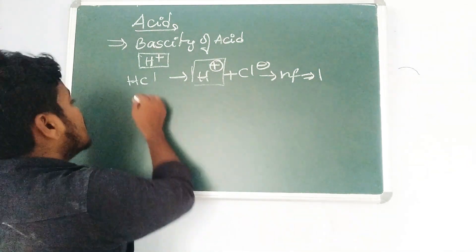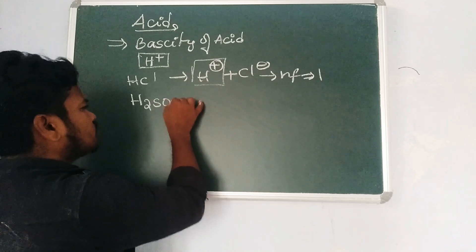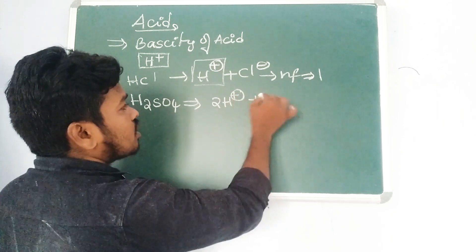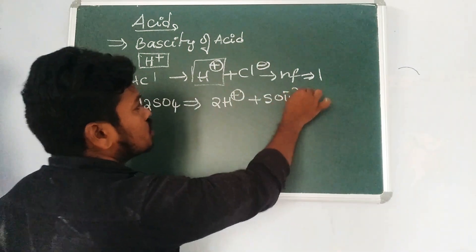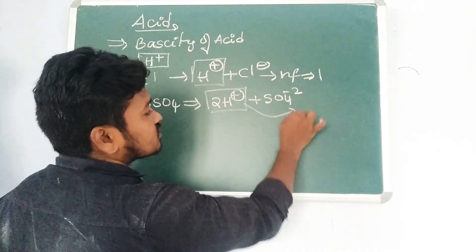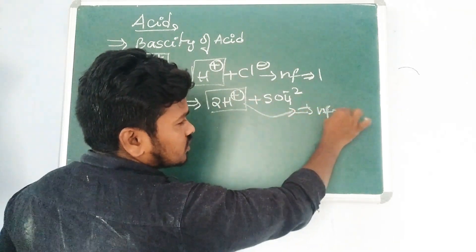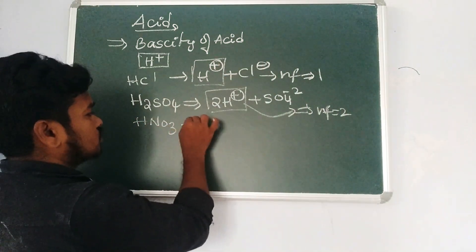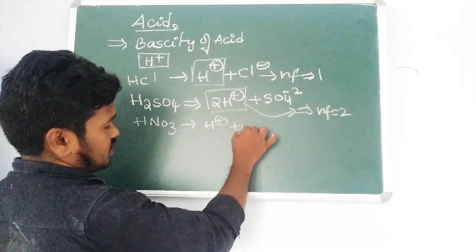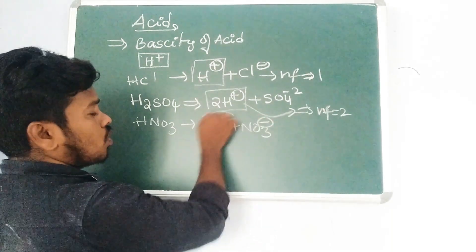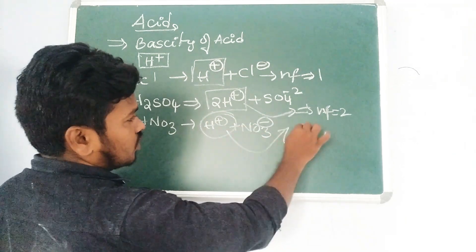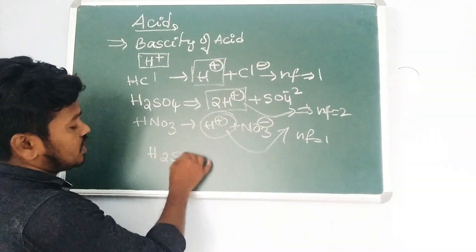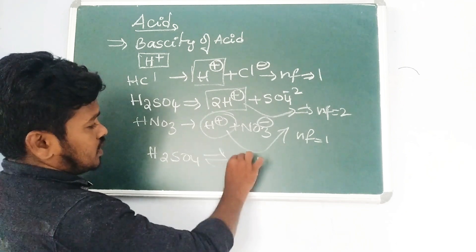For H₂SO₄, it dissociates to give 2H⁺ + SO₄²⁻, so the n-factor is 2. For HNO₃, it gives only one H⁺, so the n-factor is 1. However, if a specific reaction is given — for example H₂SO₄ → H⁺ + HSO₄⁻ — then n-factor is determined by how many H⁺ ions are actually given in that reaction.